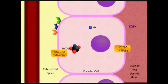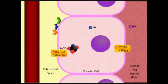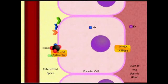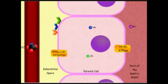As bicarbonate ion accumulates in the cell, it is ejected through the basal cell membrane into the capillary blood. As a result, blood draining from the stomach is more alkaline than the blood serving it — this is known as the alkaline tide. The bicarbonate-chloride antiporter in the plasma membrane exchanges bicarbonate molecules going out for chloride ions coming in, which is known as a chloride shift.